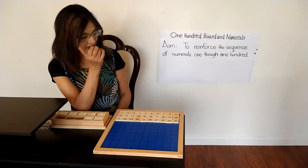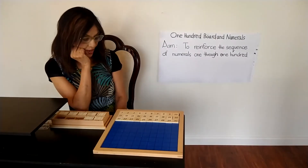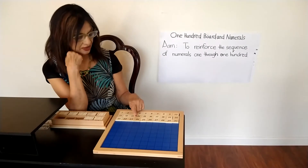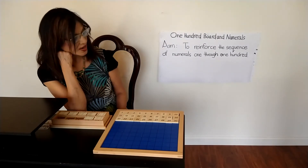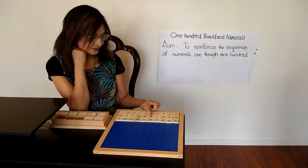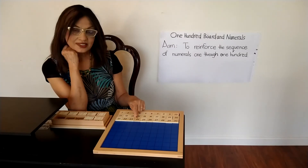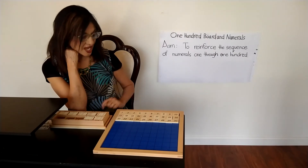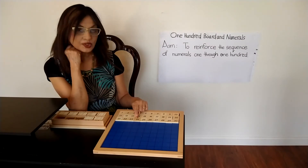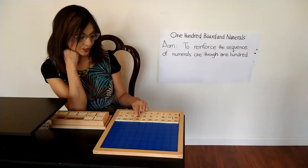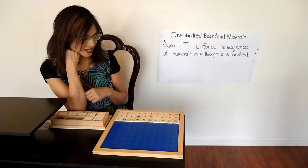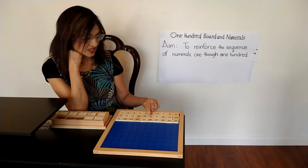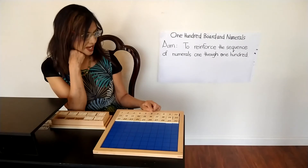Before I go, I want to give a three-period lesson. I may ask a child: show me 24. Show me 16. What is this? 24. What is this? 16. And how many units in 24? 4 units. How many tens? 2 tens. How many tens in 16? 1 ten. And 6 units.